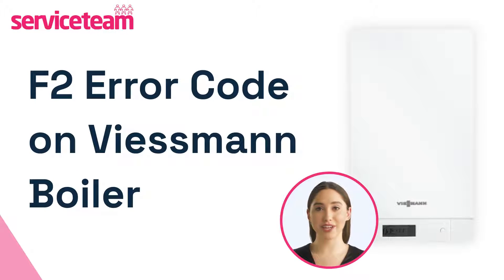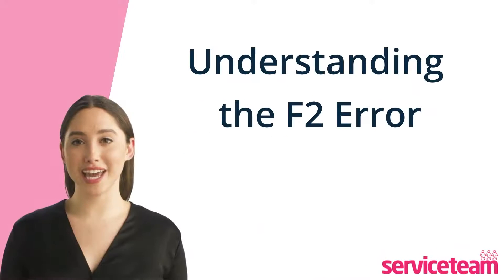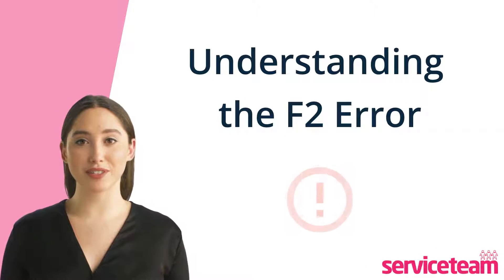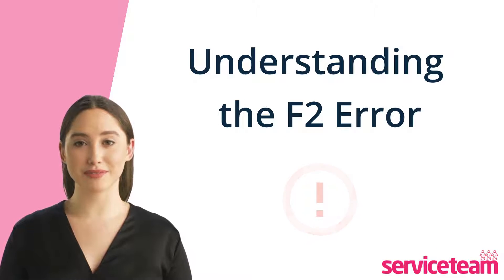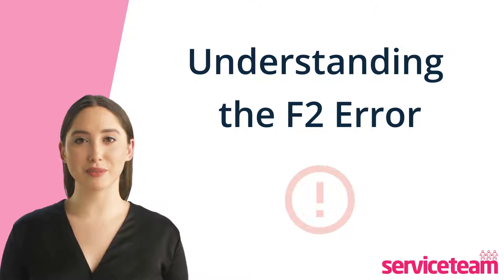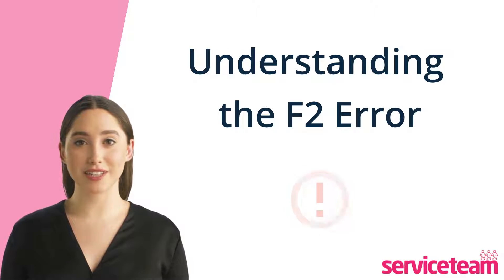Let's figure out how to resolve the F2 error code on the Wiesmann boiler. The F2 fault code on a Wiesmann boiler means your burner is locked out, so there's no flame to heat the water. This leads to a lack of central heating and hot water.